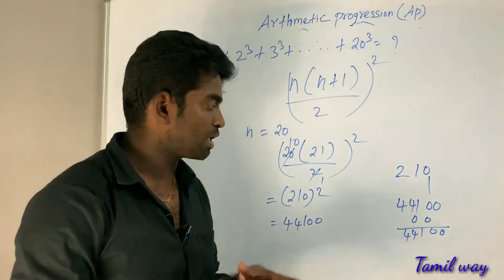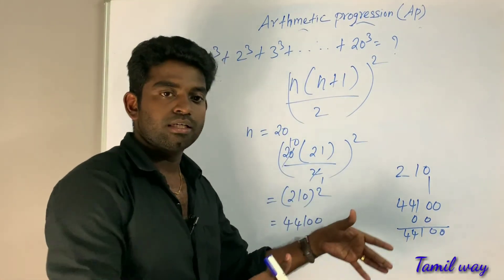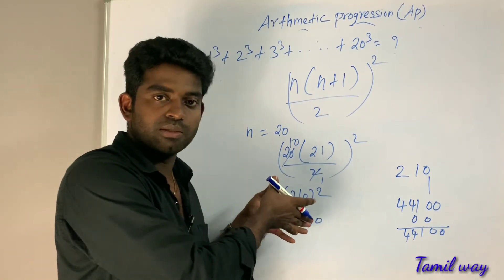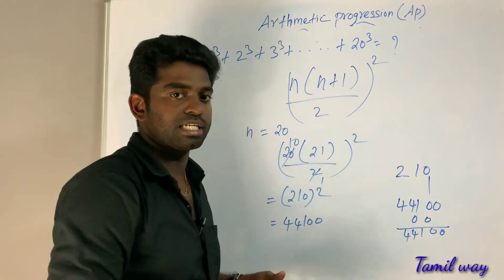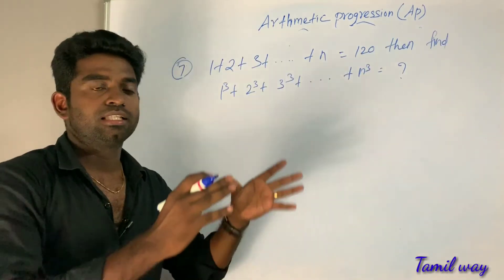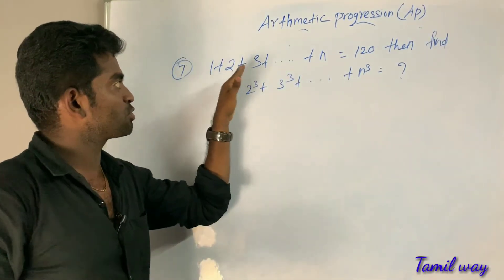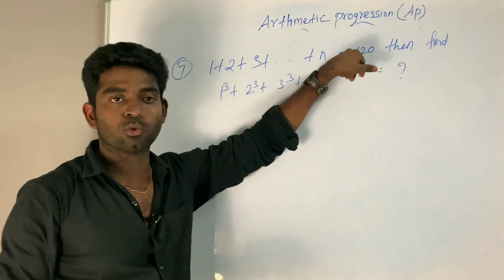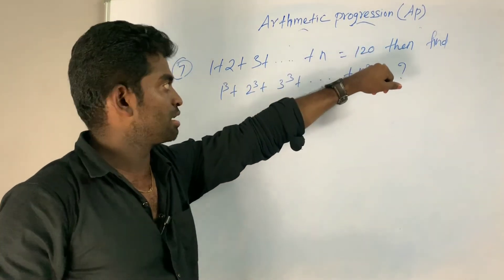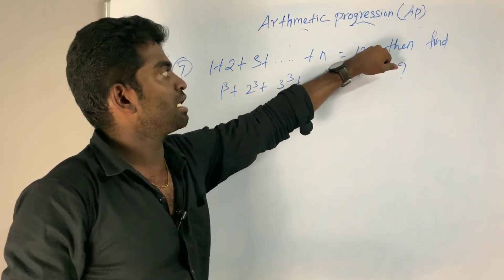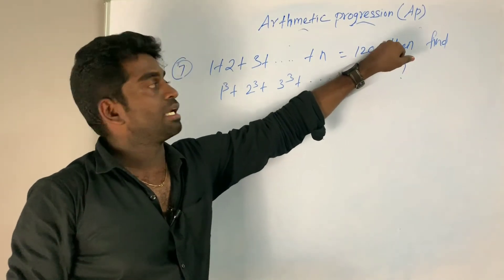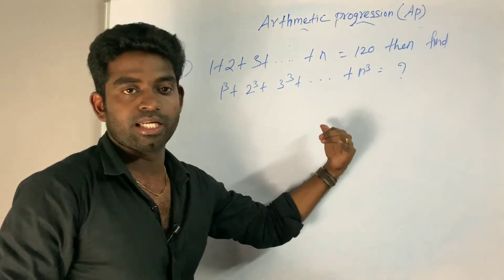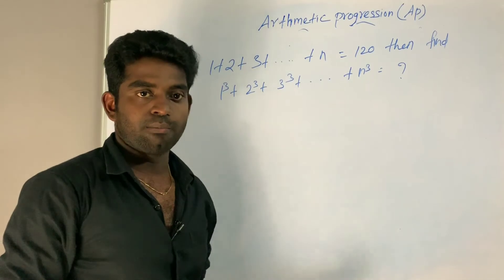If you know how to solve this, in the previous class we checked the method. Bonus problem: 1 + 2 + 3 + ... up to N equals 120. Find N. If you know how to solve this, comment below.